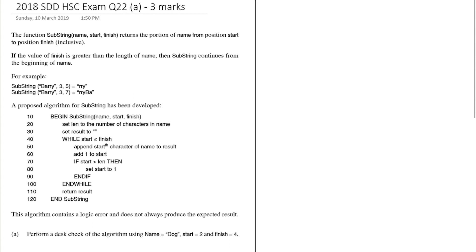If the value of finish is greater than the length of name, then substring continues from the beginning of name. For example, substring with parameters 'barry', start 3, finish 5 returns 'rry'. With parameters 'barry', start 3, finish 7, it returns 'rryba' — starting at the third character, wrapping around after the fifth character to get 'b' and 'a'.